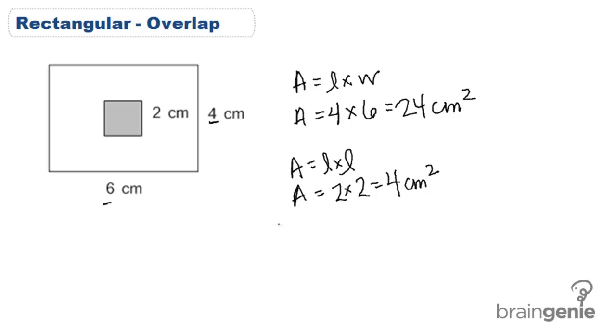Now to find the area of just the unshaded portion we are going to take 24 and subtract 4 to get 20 centimeters squared.